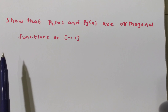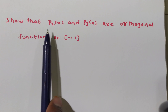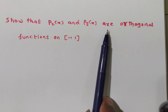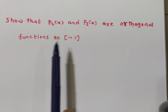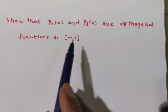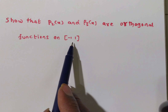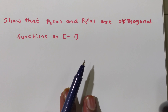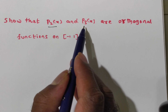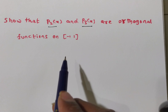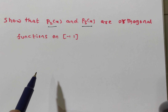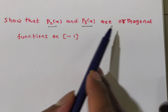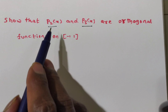The given problem is to show that P2 of X and P3 of X are orthogonal functions on the closed interval minus 1 to 1. Here, P2 of X and P3 of X are the given functions, and we have to prove these two functions are orthogonal.